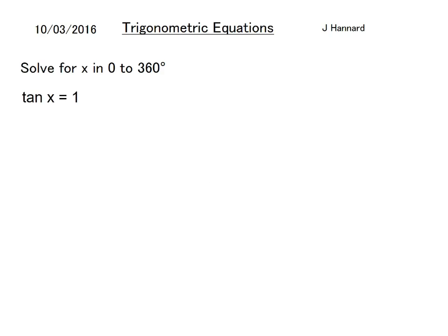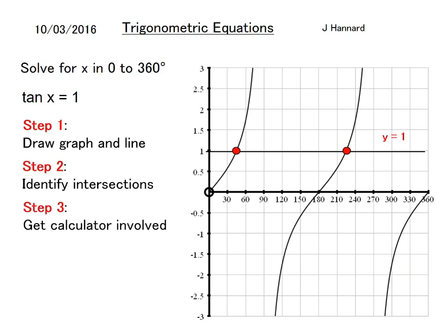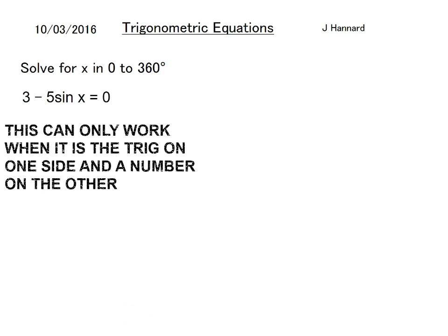Get your calculator involved: x equals 20.5, and use the symmetry to get the other, so it'll be 180 minus that answer which is 159.5. Similarly for tan, solve for x in 0 to 360, tan x equals 1. Draw the graph and the line. This is the most confusing one, the tan graph, because it's very weird. Identify the intersections and get your calculator involved, so 45 degrees. Solutions on a tan graph come every 180 degrees, so you can simply just add 180 onto the answer.